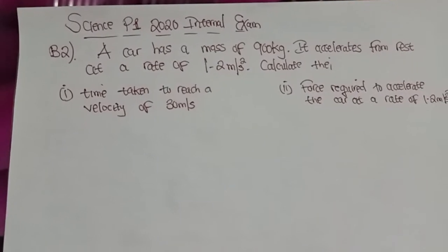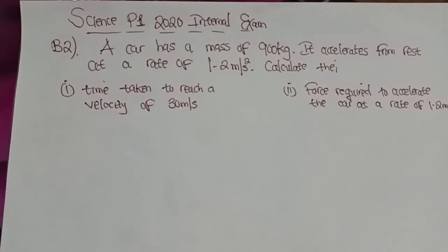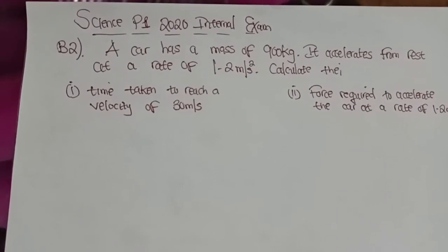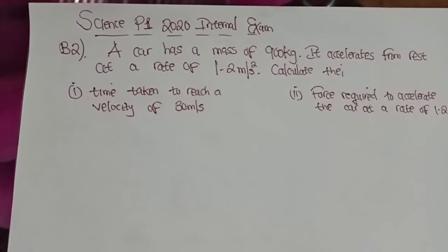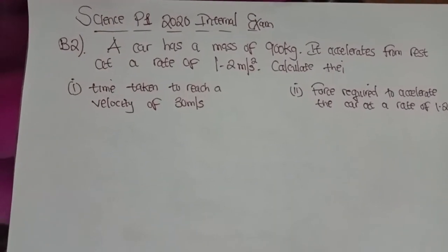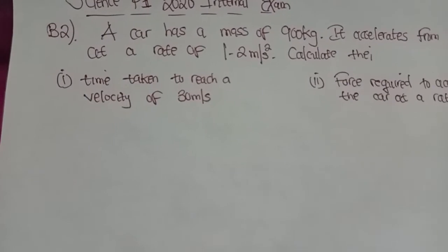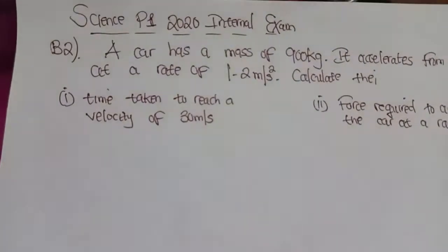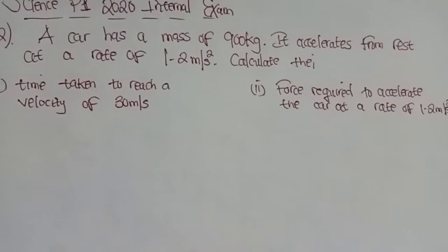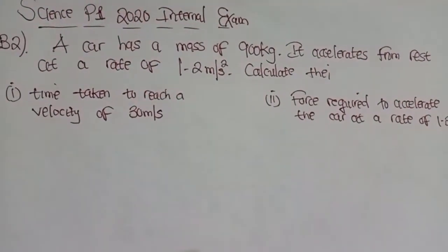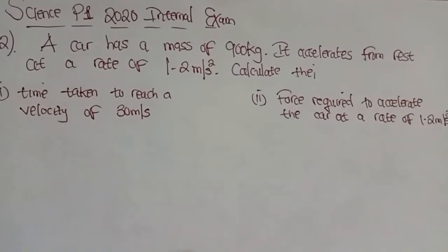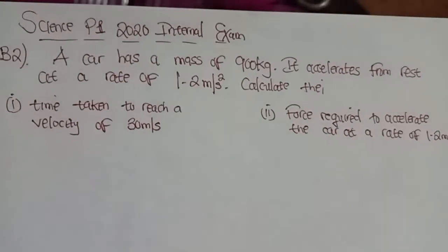The question reads: A car has a mass of 900 kg. It accelerates from rest at a rate of 1.2 m per second squared. Calculate: 1. The time taken to reach a velocity of 30 m per second. Then, 2. The force required to accelerate the car at a rate of 1.2 m per second squared.